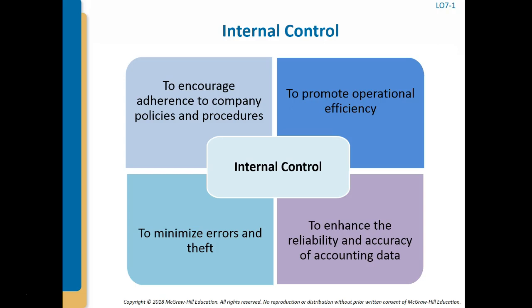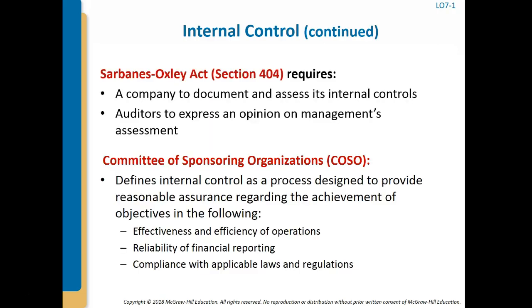From a financial accounting perspective, the focus is on controls intended to improve the accuracy and reliability of accounting information and to safeguard the company's assets. Recall from Chapter 1 that Section 404 of the Sarbanes-Oxley Act requires companies to document their internal controls and assess their adequacy. The Public Company Accounting Oversight Board further requires the auditor to express its own opinion on whether the company has maintained effective internal controls over financial reporting.